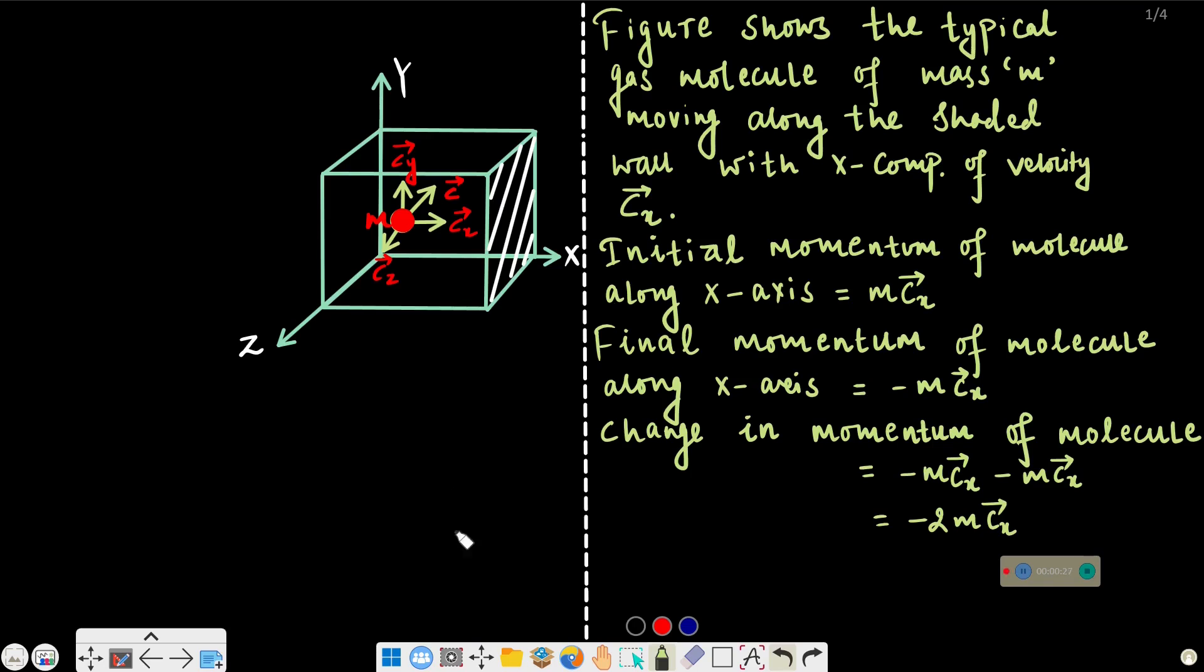At first, in this cubical vessel, there are gas molecules. Let us suppose that this molecule is moving with velocity c, with its component cx along x-direction, cy along y-direction, and cz along z-direction.